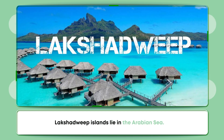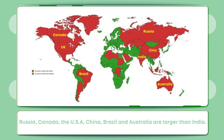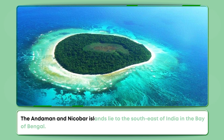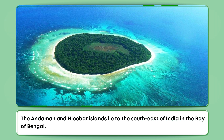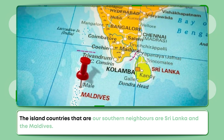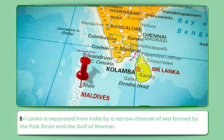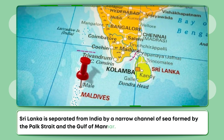Lakshadweep Islands lie in the Arabian Sea. Russia, Canada, the USA, China, Brazil and Australia are larger than India. The Andaman and Nicobar Islands lie to the southeast of India in the Bay of Bengal. The island countries that are our southern neighbors are Sri Lanka and the Maldives. Maldives Islands are situated to the south of the Lakshadweep Islands. Sri Lanka is separated from India by a narrow channel of sea formed by the Palk Strait and the Gulf of Mannar.